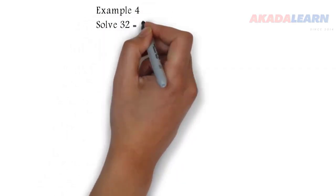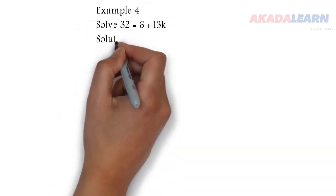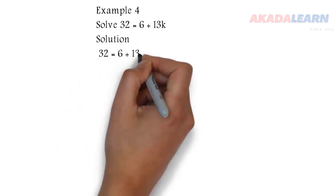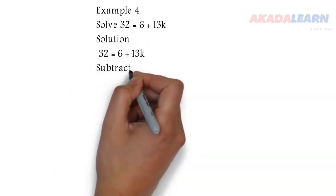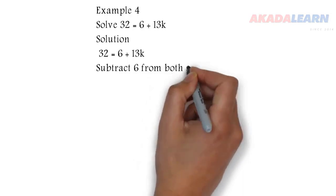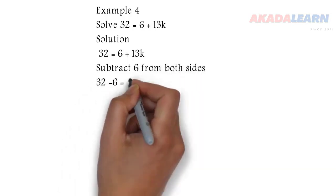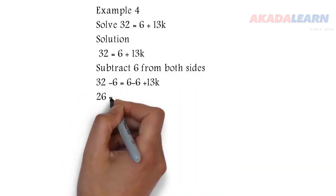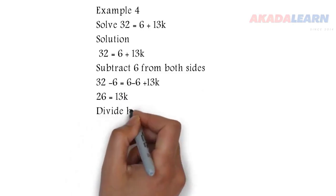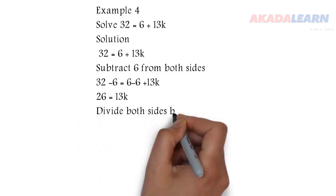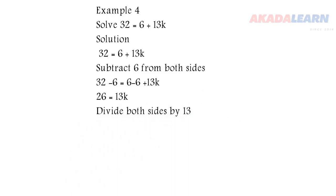Example 4: solve 32 = 6 + 13k. The first thing we need to subtract 6 from both sides of the equation. When we do that, we will get 26 = 13k. To make k stand alone, divide both sides by 13. So 26 divided by 13 we know is 2. So 2 is equal to k, the same thing as saying k is equal to 2.